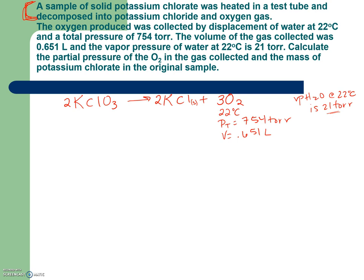First, we need to calculate the partial pressure. Pressure total is equal to the pressure of the water plus the pressure of the oxygen. That's my two gases that are in there. It told me that my total pressure was 754 torr, and that the pressure of the water vapor pressure is 21, and that I'm looking for my pressure of my O2. So my pressure of my O2 is going to be that 754 minus the 21, and I'm going to get 733 torr.